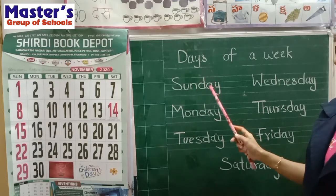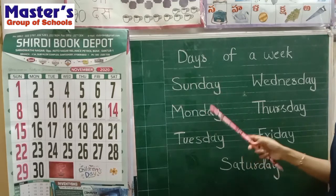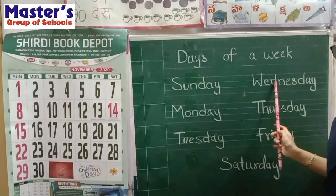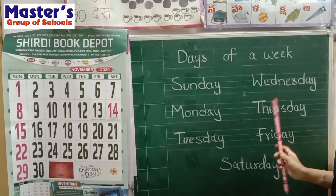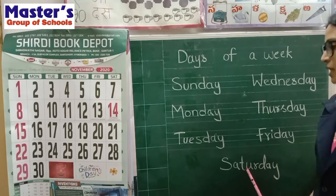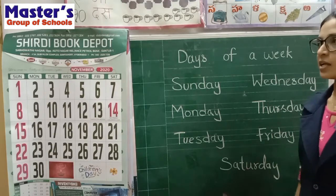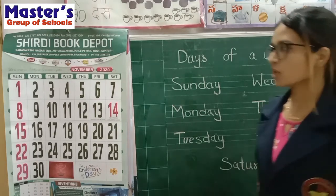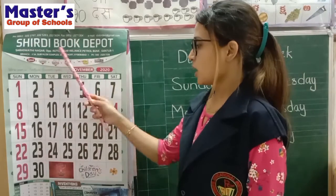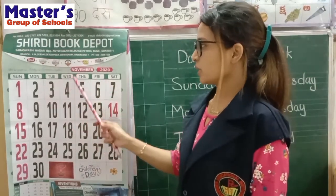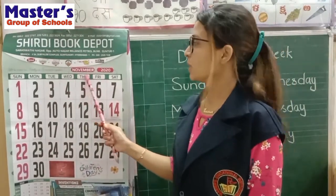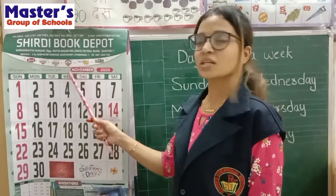Sunday, Monday, Tuesday, Wednesday, Thursday, Friday and Saturday. Look here. This is this month's calendar. November. This month is November.